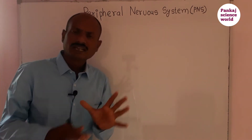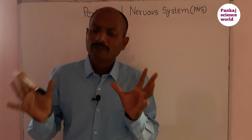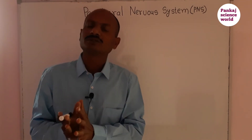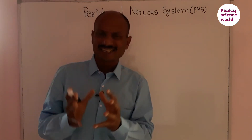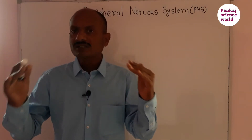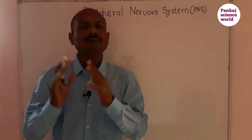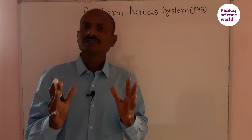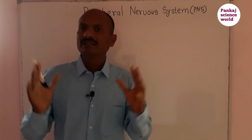After the central nervous system, the second part is the peripheral nervous system. The peripheral nervous system consists of the nerves that arise from the central nervous system. The nerves that come out from the brain and spinal cord form our peripheral nervous system.